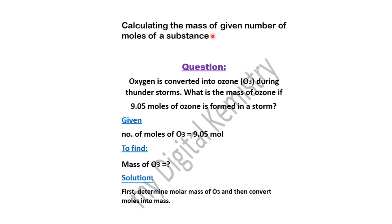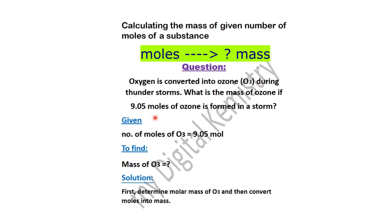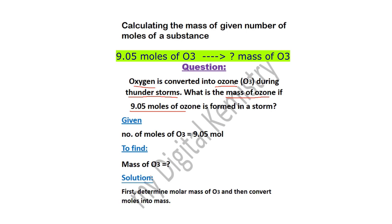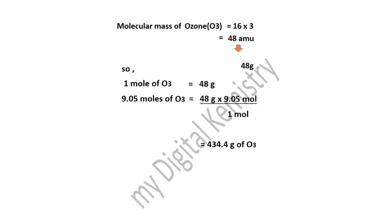Calculating the mass of a given number of moles of a substance: जब किसी substance के number of moles given हों तो उसका mass find out करना है। Question: Oxygen is converted into ozone during thunderstorms. What is the mass of ozone if 9.05 moles of ozone is formed in a storm? Given: 9.05 moles of ozone. Find: mass of ozone. पहले molar mass of ozone find out करेंगे। Ozone = O3, एक molecule है।